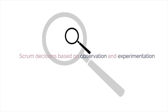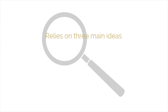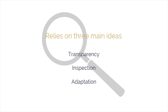In Scrum, decisions are based on observation and experimentation rather than on detailed upfront planning. Empirical Process Control relies on three main ideas: transparency, inspection, and adaptation. We'll now discuss these three main ideas with the help of a few diagrams.